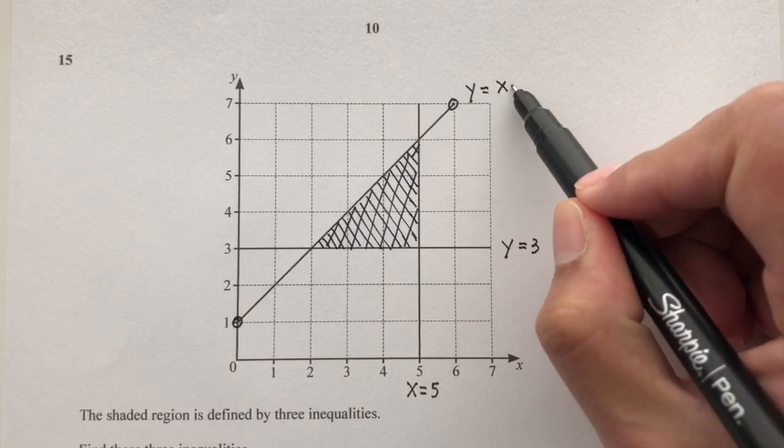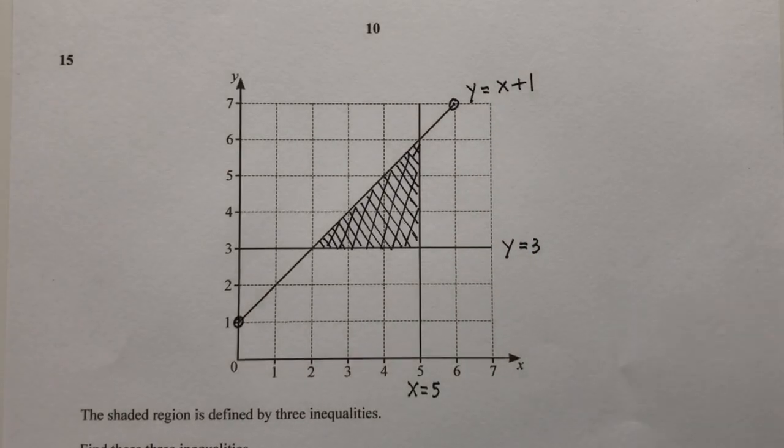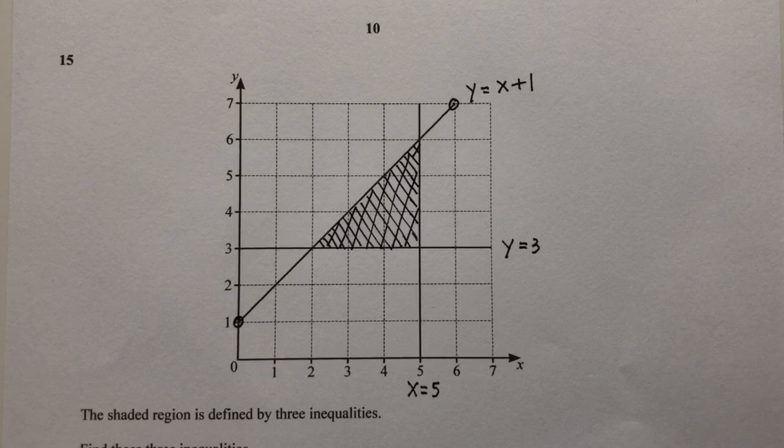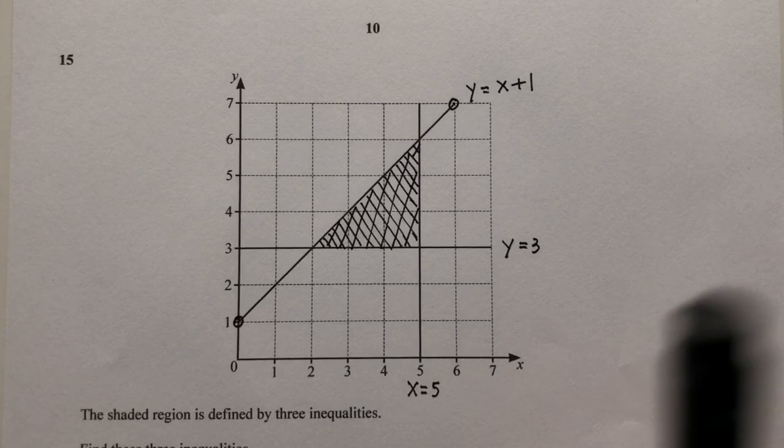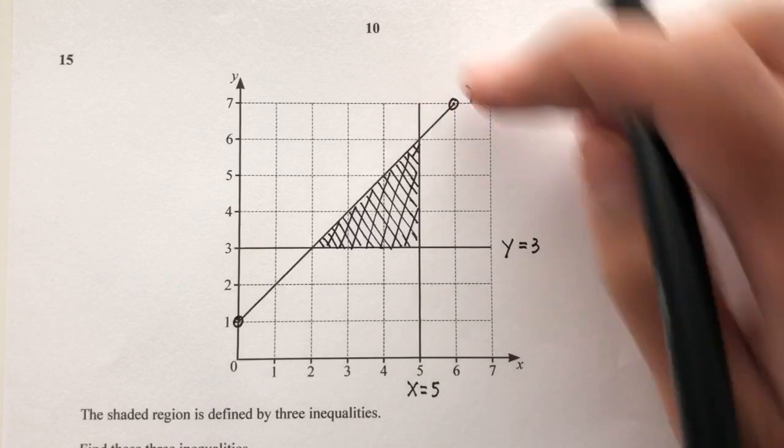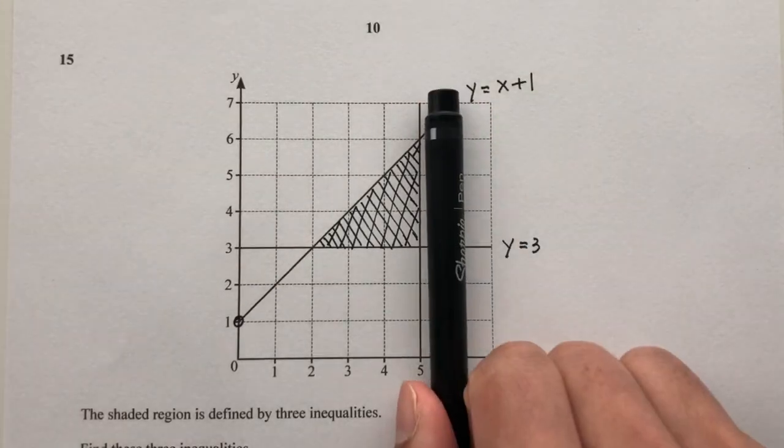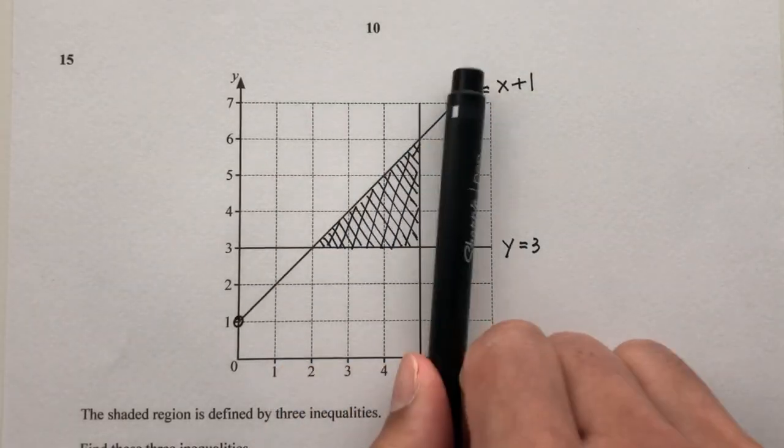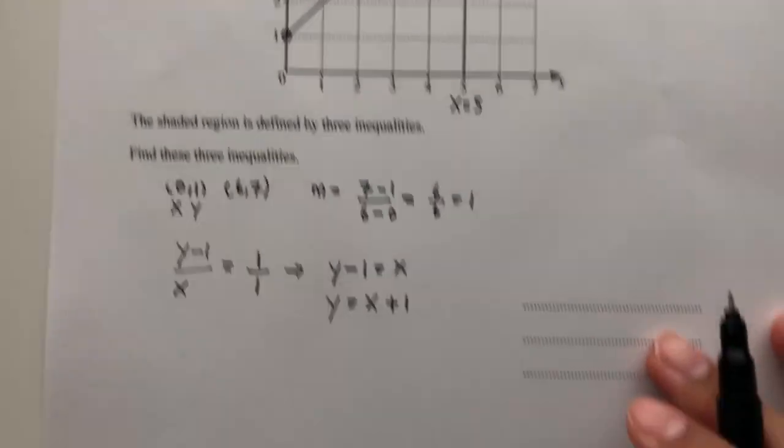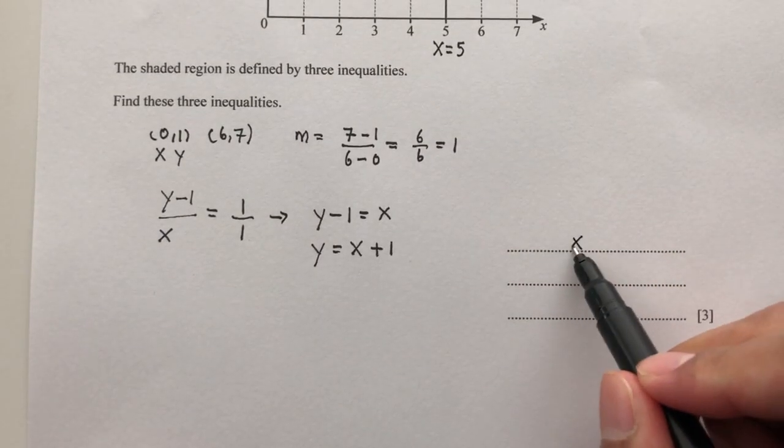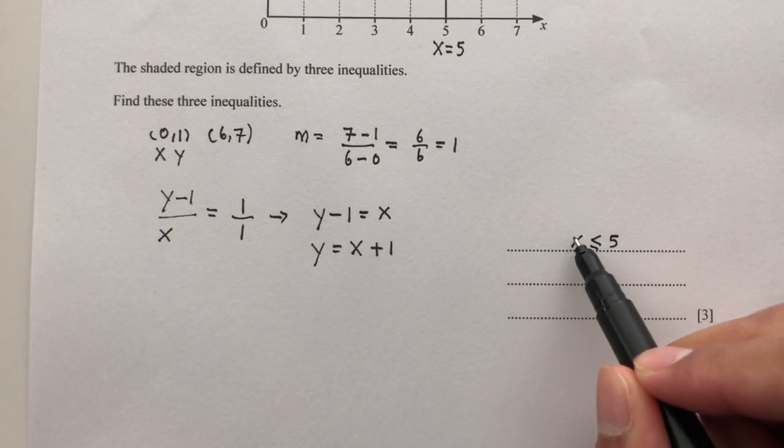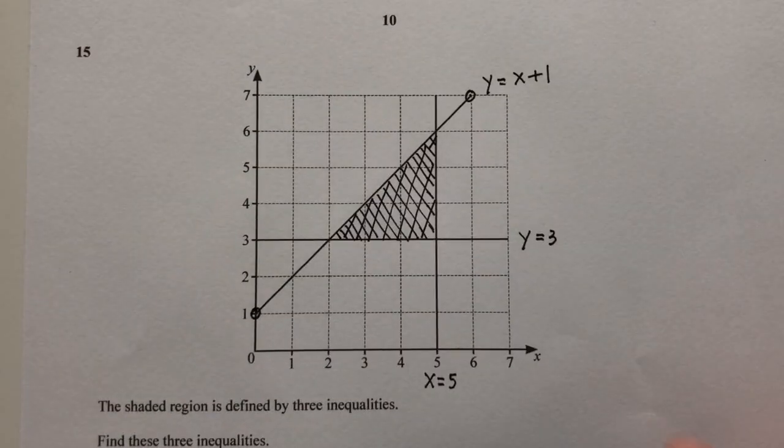Now step by step, let's find the inequalities that define that region. First, let's begin with this line. As you can see, it is on the left side of this line. Left side means less than 5, so that will be x less than or equal to 5. That is the first one. This one is above this line, so it has to be y above 3, or y greater than or equal to 3.